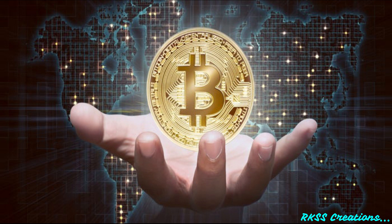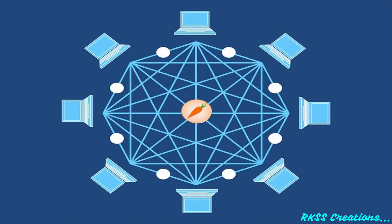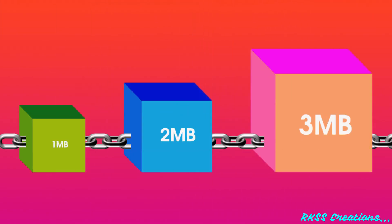The most important question: is blockchain secure? Blockchain technology accounts for the issues of security and trust in several ways. First, new blocks are always stored linearly and chronologically — they are always added to the end of the blockchain. Each block has a position on the chain called a height. As of November 2020, the block height has reached 656,197 blocks. After a block has been added to the end of the blockchain, it is very difficult to go back and alter its contents unless the majority reaches a consensus to do so.